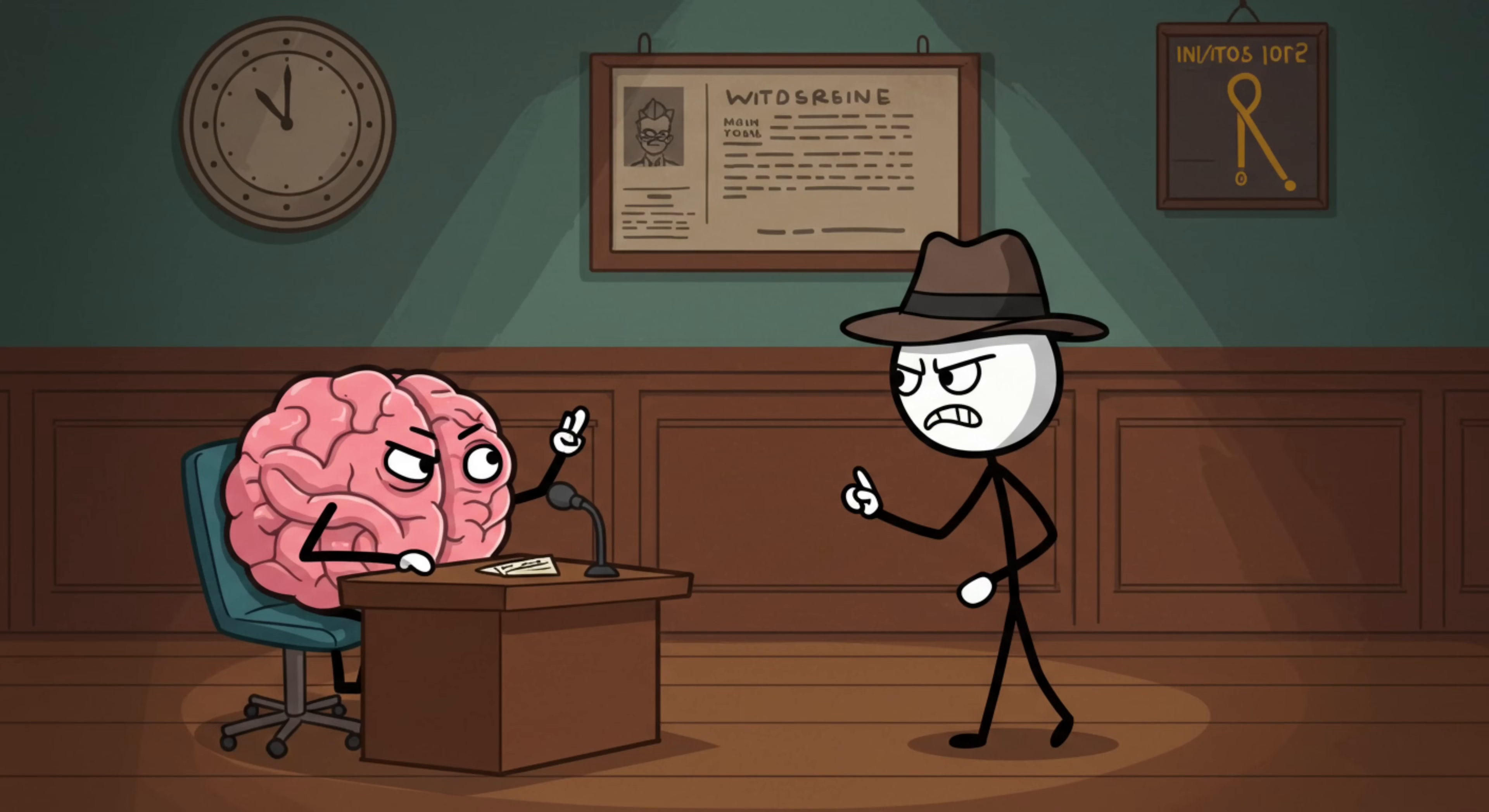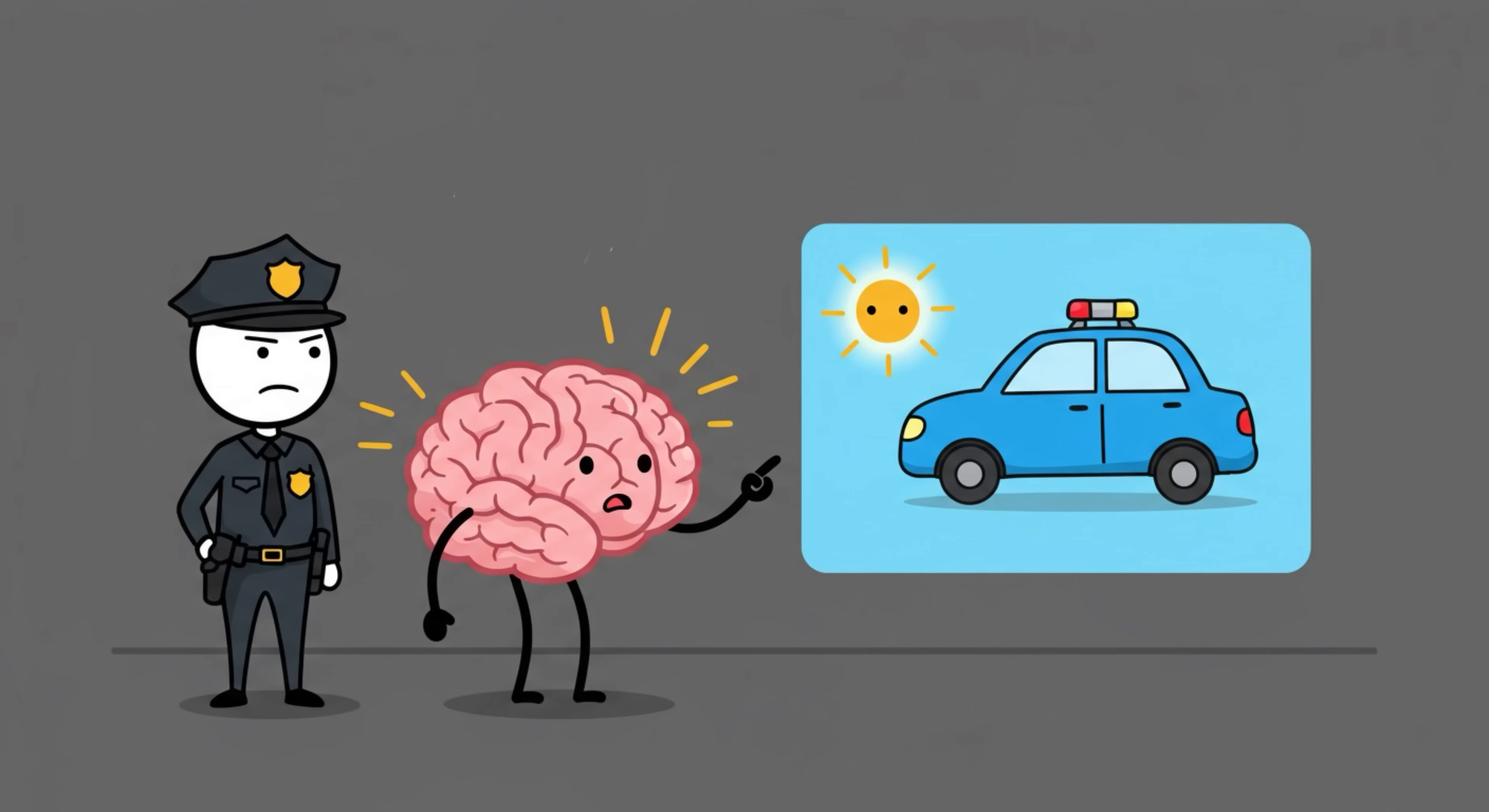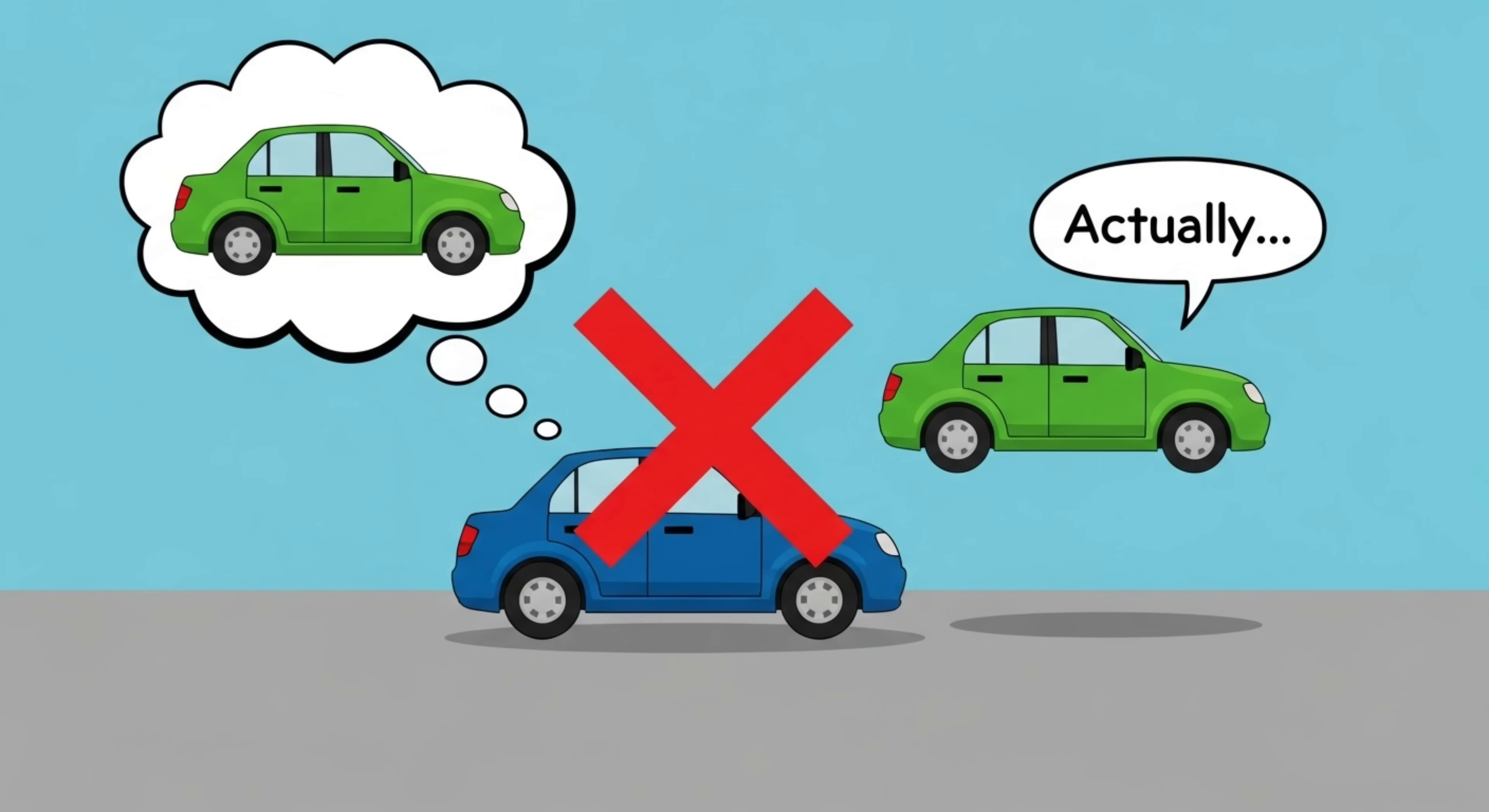Think of it like your brain is a terrible witness in a crime drama. The cop says, 'What color was the getaway car?' And your brain goes, 'Definitely blue,' with the certainty of a thousand suns. Except, nope, it was green.